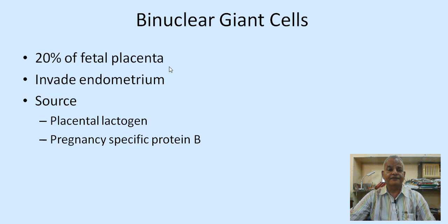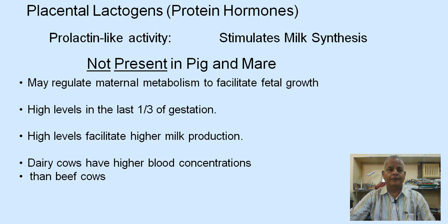The binuclear giant cells form 20 percent of the fetal placenta. They invade the endometrium and are the source of placental lactogens and pregnancy-specific protein B. Placental lactogens are protein hormones with lectin-like activity. They stimulate milk synthesis, are not present in the pig and the mare, and regulate maternal metabolism to facilitate fetal growth. They are present in high levels in the last one-third of gestation, and high levels facilitate higher milk production. Dairy cows have higher blood concentrations than beef cows.